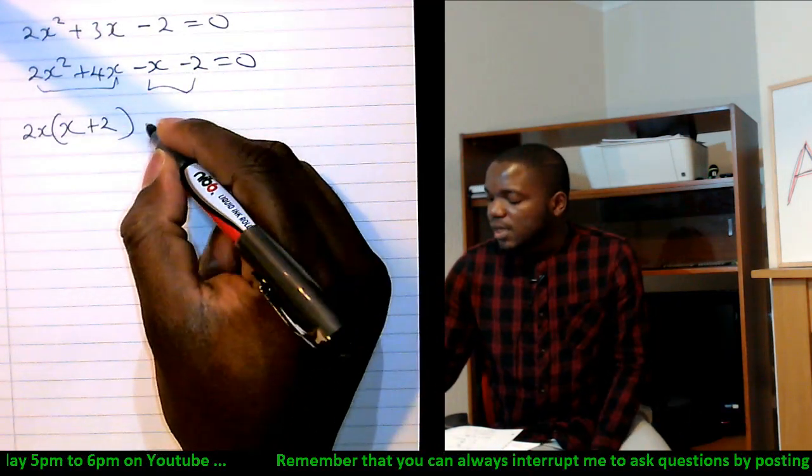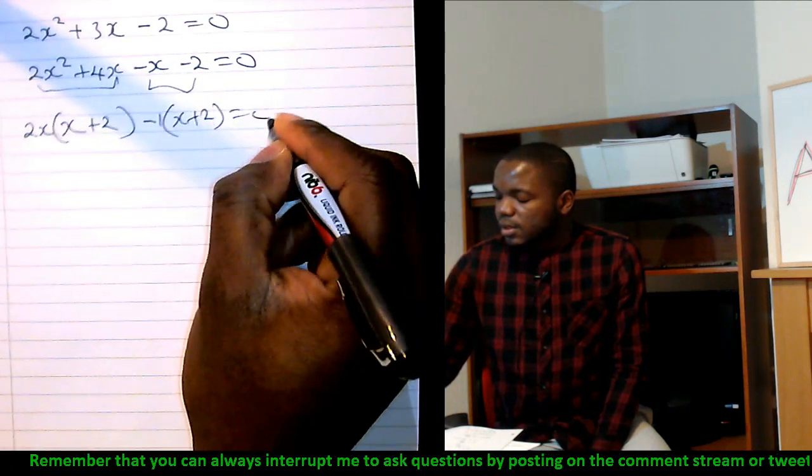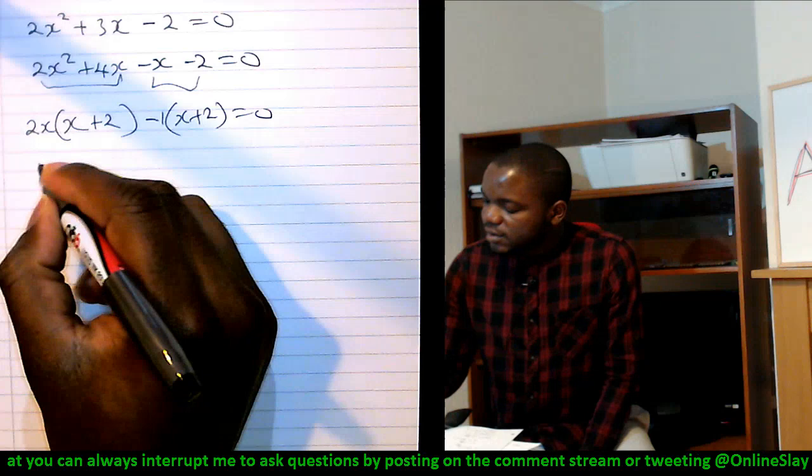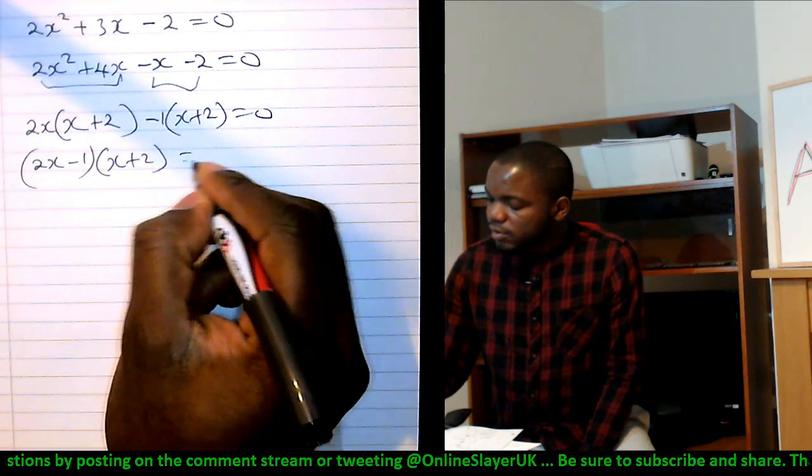What's common to these two? Minus 1. So minus 1 is out, you're left with x, you're left with plus 2. And again, factorize this so you get 2x minus 1 into x plus 2 equals 0.